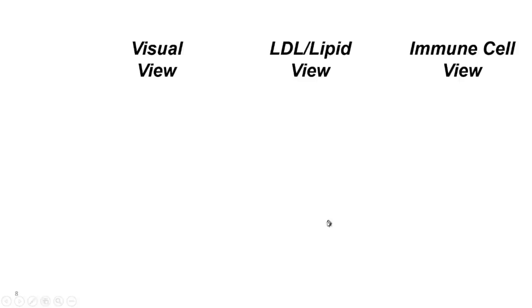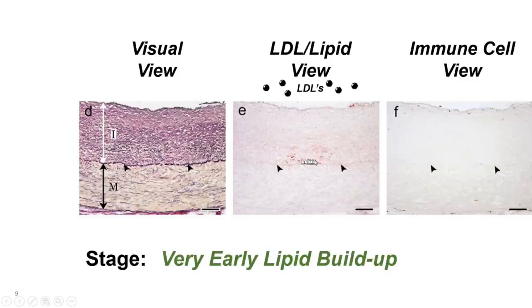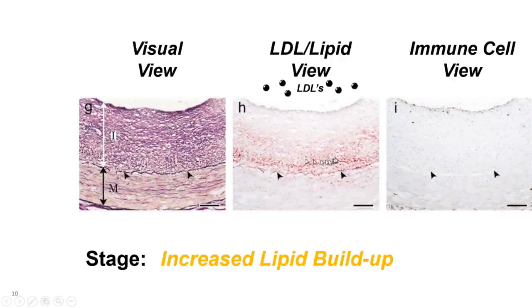Now we'll show where cholesterol actually builds up in the intima. In a healthy artery there's a big thick intima and when stained for lipid or LDLs, there's none. In very early lipid buildup, the red staining for LDL is right down at the bottom of the intima — not anywhere else. With increased lipid buildup, there's a red band right down at the media interface. If LDL were coming in from the lumen, you'd wonder why they're not concentrated throughout, especially higher up on their way down.